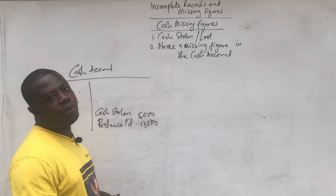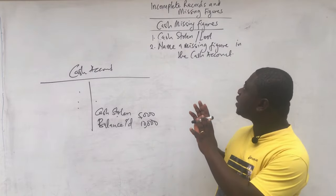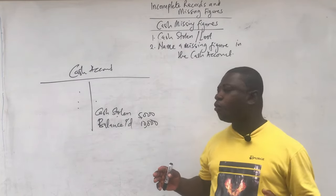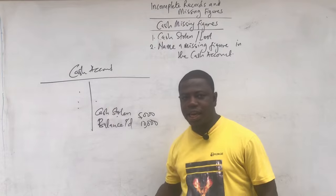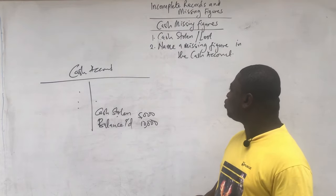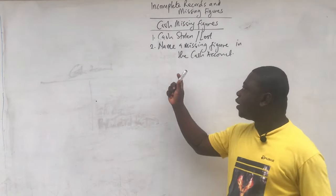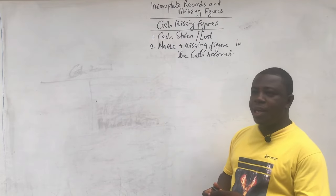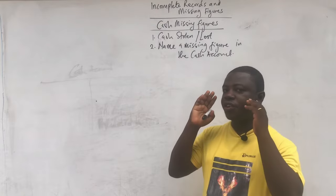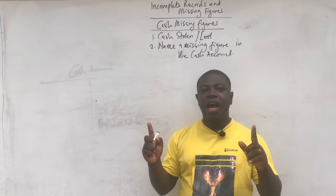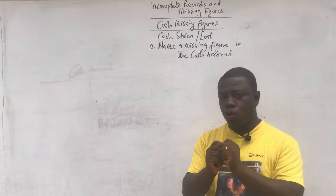The cash stolen is not going to be a problem. At the end of this lesson for the missing figures, I'm going to look at a very complex question which involves cash stolen. The next thing we are going to look at is the naming of a missing figure. That one usually doesn't come up because the focus mostly is on the cash stolen. However, if you meet it, this is how you go about it.